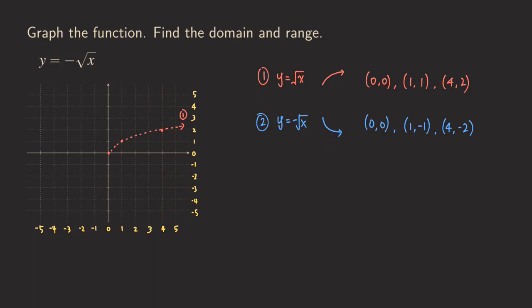So what will happen is that we are going to have a reflection about the x-axis, and the shape of the graph will look like this. The point zero zero will still be the same. Then what happens is that we change the y value for this point to the opposite — if it had a y value of one, we get negative one, and the x value stays the same. Same idea for the third point: the y value of two becomes negative two. So it goes in the opposite direction of the x-axis.